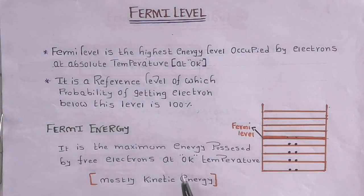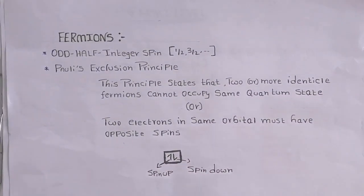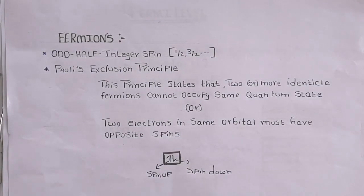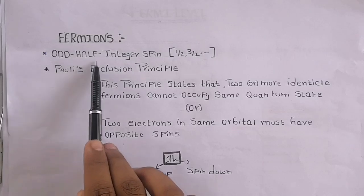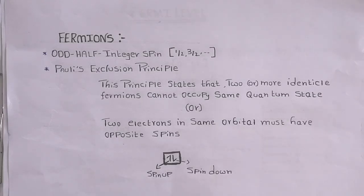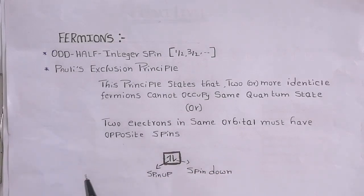Before understanding this concept, first let's see what fermions are. Fermions are particles that obey Fermi-Dirac statistics and generally have half odd integer spin. Examples of these particles are protons, electrons, and neutrons.